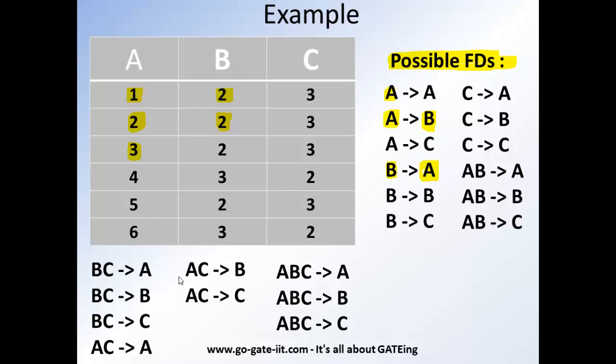For instance, one more example AC gives B means the determinant part is made up of two attributes here. A and C uniquely identifies B. So you can notice that 1 and 3 uniquely identifies two. 2 and 3 uniquely identifies two. 3 and 3 uniquely identifies two. So there is no repetition of any of the determinant part. So that means this AC derives B is a valid functional dependency for the given relation.